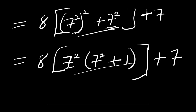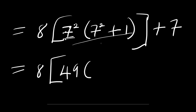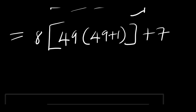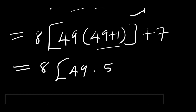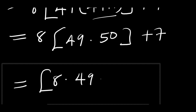Now let's proceed. The next thing we are going to do: what is the value of 7 power 2? This is 49. So we have 8 times 49 times 49 plus 1, then plus 7. So this gives us 8 times 49 times 50, then plus 7. We can further rewrite this as 8 times 49 times 50, plus 7.